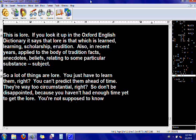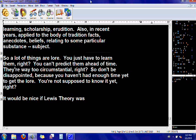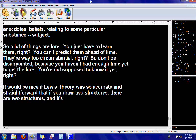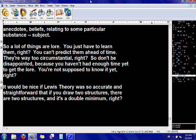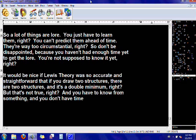It would be nice if Lewis theory was so accurate and straightforward that if you draw two structures, there are two structures, and it's a double minimum. But that's not true. And you have to know from something, and you don't have time to know yet. As time goes on, maybe you'll figure it out.